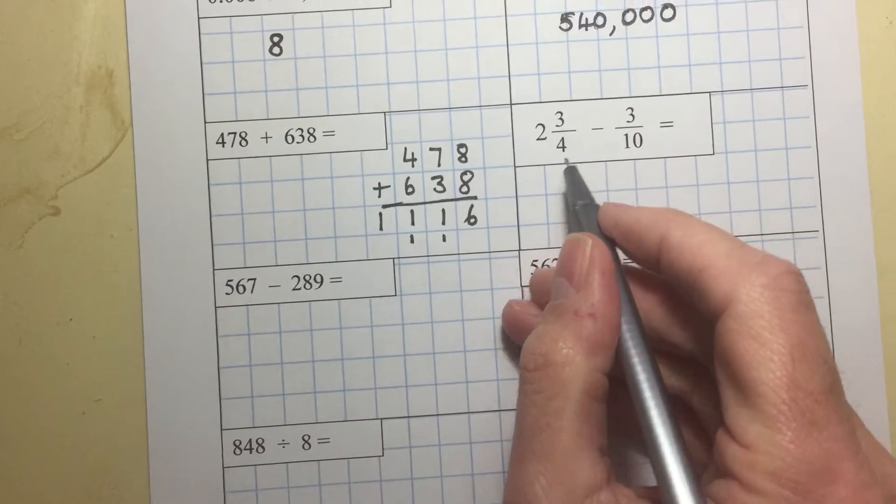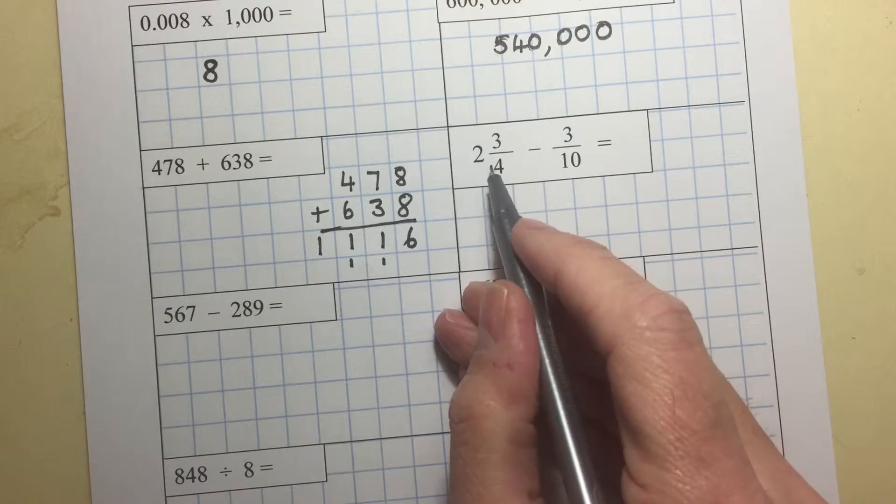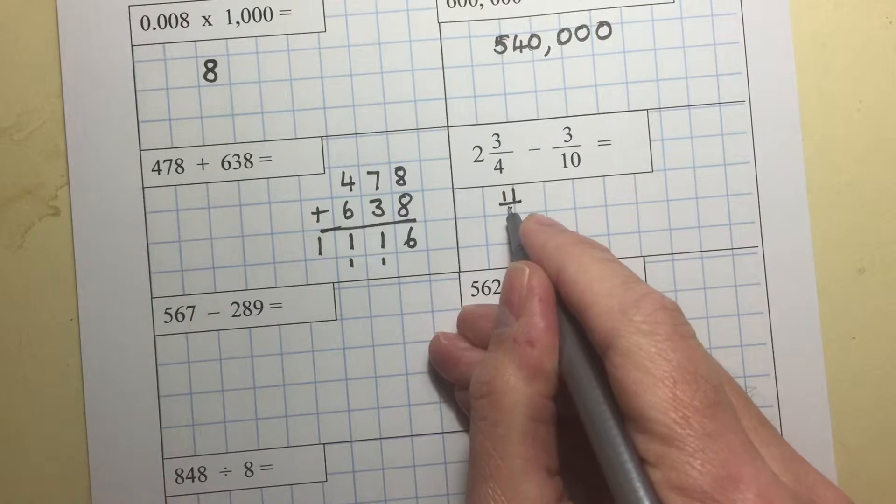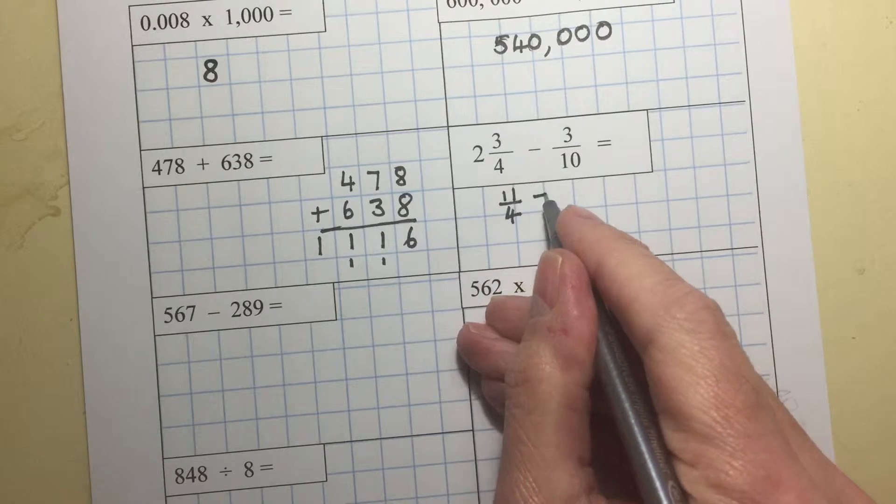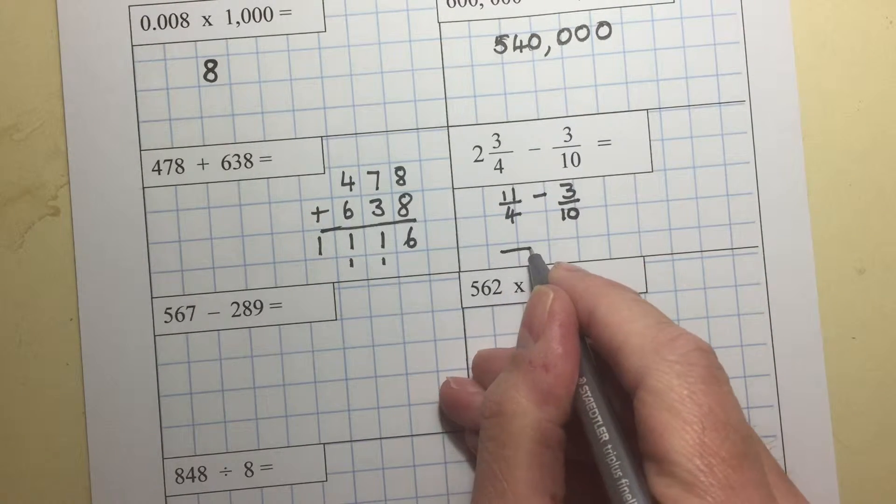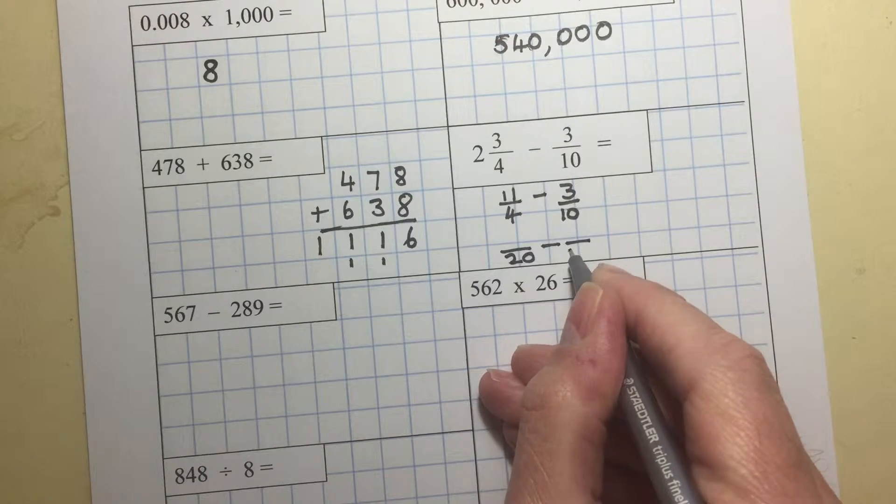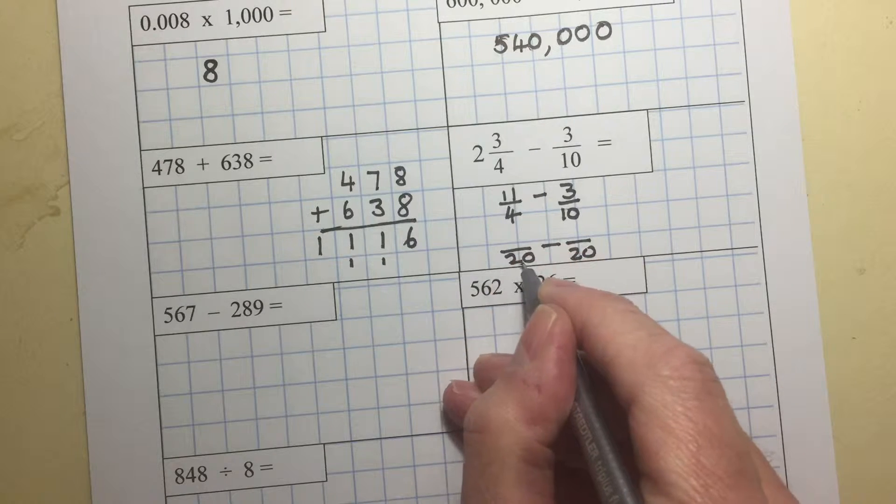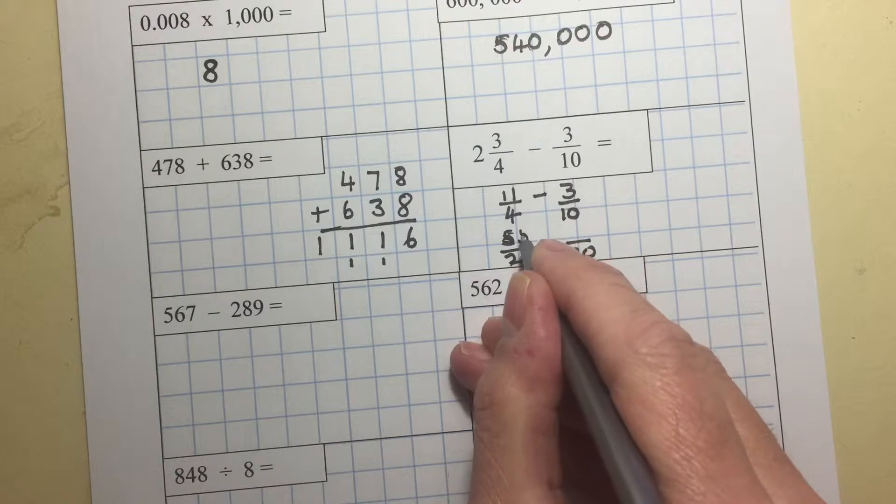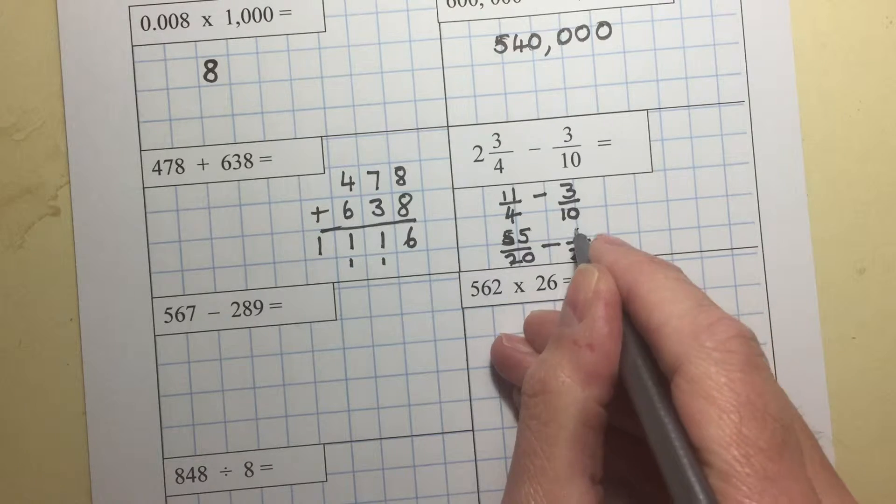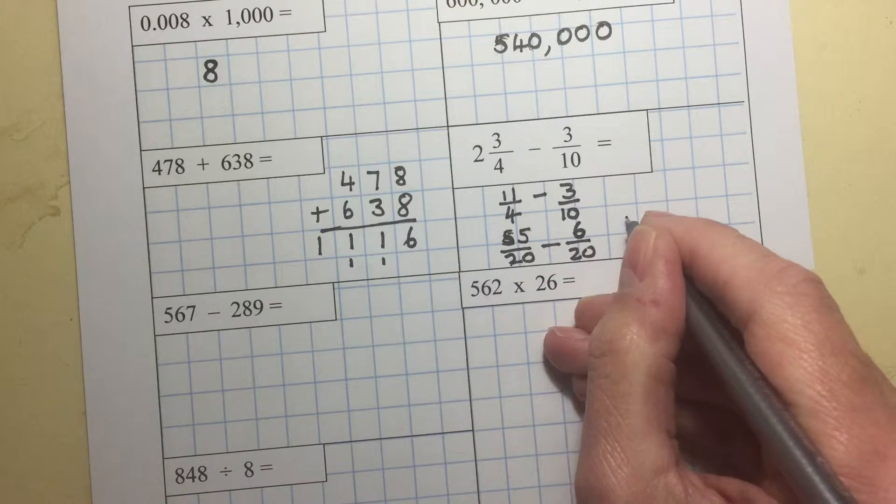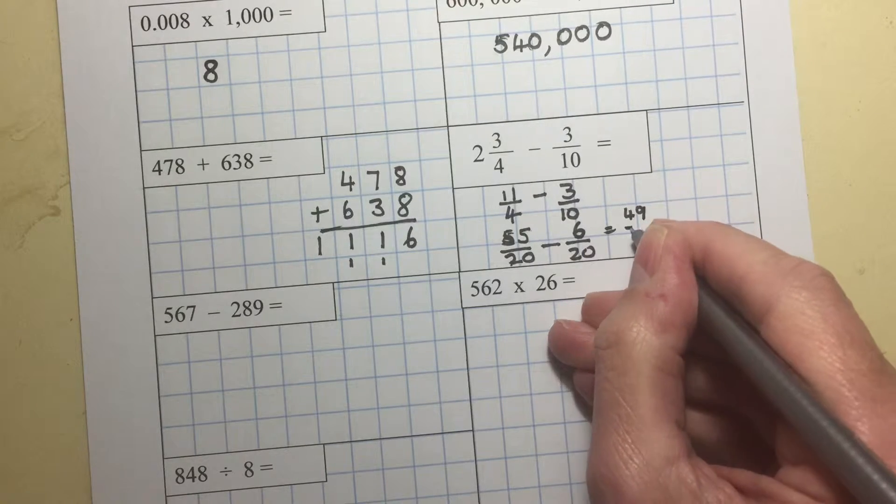2 and 3 quarters minus 3 tenths. Well, 2 and 3 quarters is 11 quarters. 4 times 2 is 8 plus 3 is 11. Minus 3 tenths. The lowest common denominator is 20. And it's 4 times 5 gives 20, so we're going to multiply the top by 5 as well. 10 times 2 is 20, so we need to multiply the top by 2. So we've got 55 minus 6, which is 49 over 20.